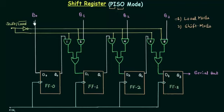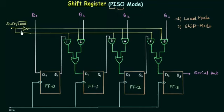Flip-flop number 0 will have B0, flip-flop number 1 will have B1, flip-flop number 2 will have B2, and flip-flop number 3 will have B3. All 4 bits are stored in the respective flip-flops during load mode. For this, you need the input shift/load complement. Loading occurs when this input is low, making it an active low signal. When it is 0, we have 1 because of the NOT gate and 0 at the other point.